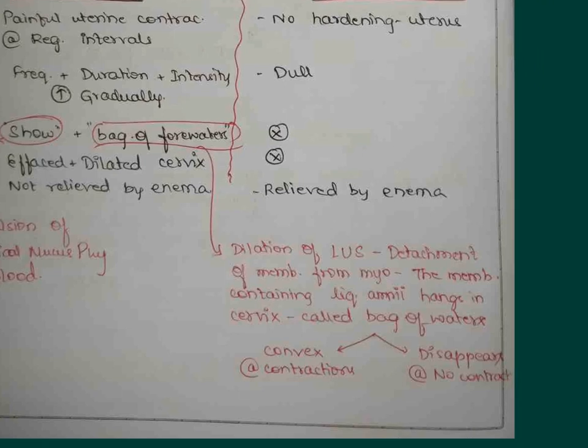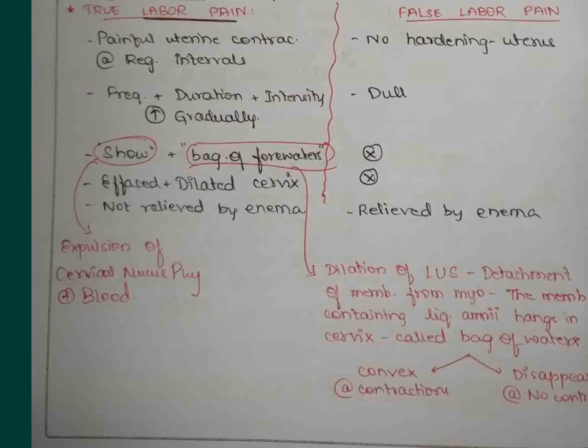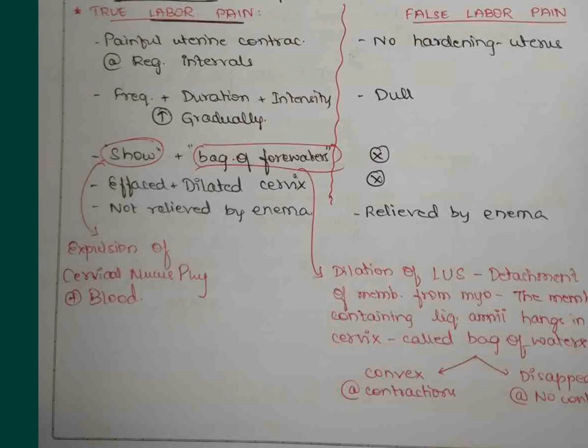The bag of membrane is the detachment of fetal membranes from the myometrium. As a result, the membrane containing the liquor amnii hangs down in the cervix, called the bag of waters. When contractions take place, it becomes convex. When there is relaxation, this convexity will disappear. That itself is called the bag of membranes. Simply it is due to the dilation of the lower uterine segment or effacement of the cervix. It is not relieved by enema. Enema is the process of giving rectal liquid or gas.